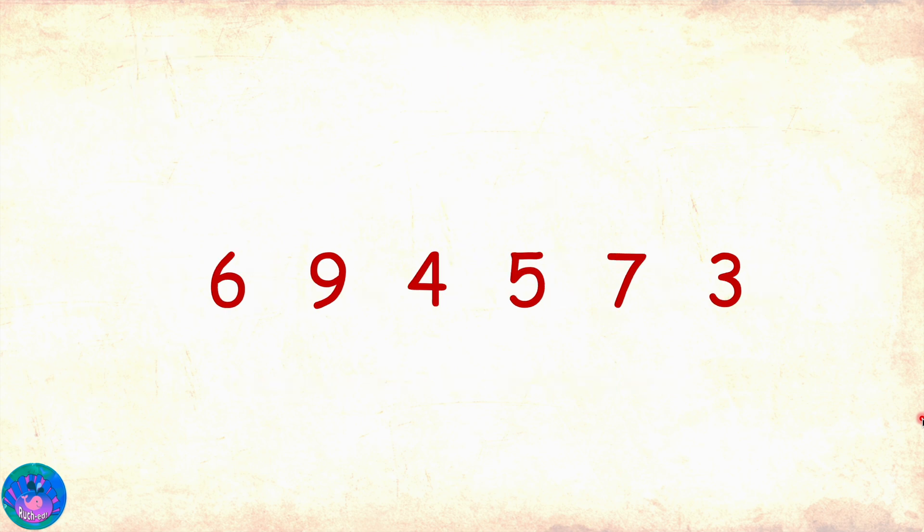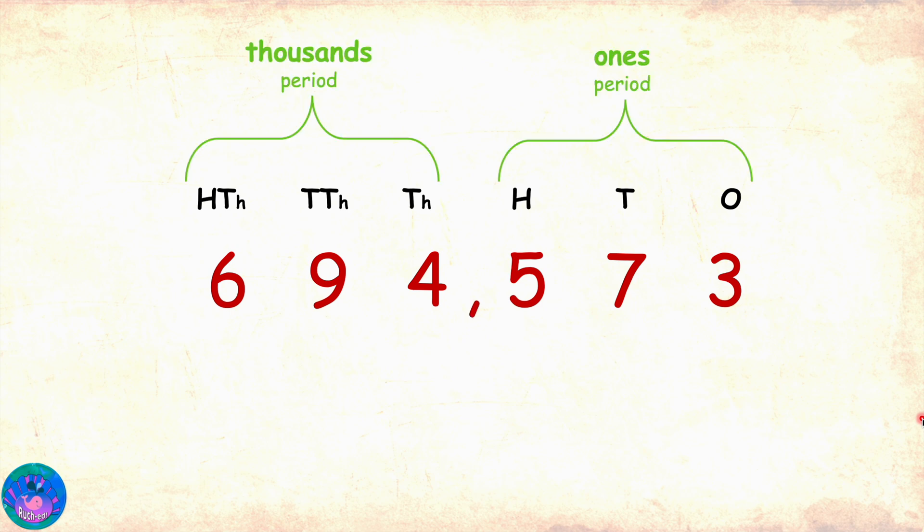Here's one more. Six, nine, four, five, seven, three. A six-digit number. So, here are the places. And there would be only two periods. Ones and thousands. Comma between periods. And the number is six hundred and ninety-four thousand five hundred and seventy-three.